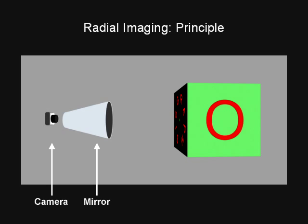Consider a conventional camera looking through a hollow cone that is mirrored on the inside. The axis of the cone and the optical axis of the camera are coincident.